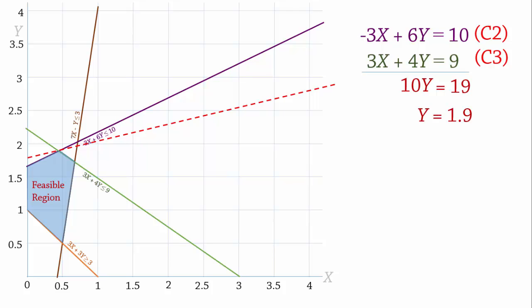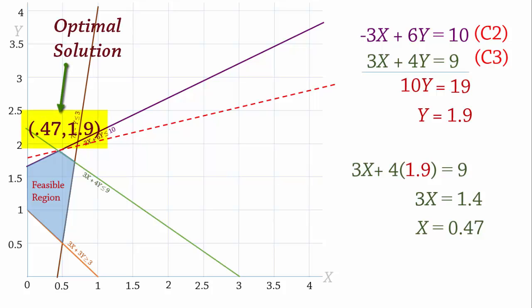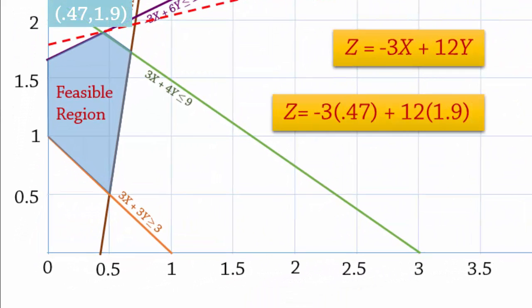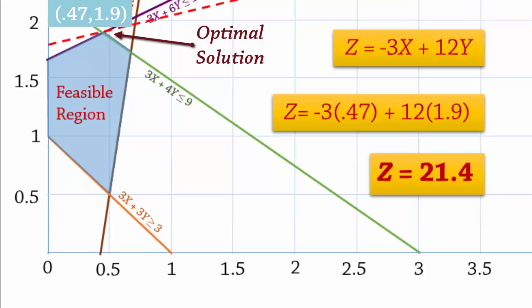Substituting that value of y in C3, we have 3x plus 4 times 1.9 equals 9. That is, 3x equals 1.4 and x equals 0.47. So the optimal solution is x equals 0.47 and y equals 1.9. Plugging that point into the objective function, we have negative 3 times 0.47 plus 12 times 1.9 which gives 21.4. So the optimal solution is x equals 0.47 and y equals 1.9. And the corresponding maximum value of the objective function is 21.4.